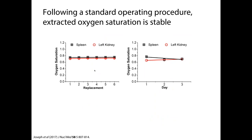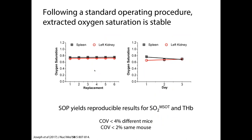Given the fluctuations we saw — oxygen saturation showing a relatively minor trend and total hemoglobin a bit larger — we developed a standard operating procedure which allowed us to extract measurements that were stable. What I show here are measurements for repeated measures over six different repeats for oxygen saturation, and over several days for the same metric. When you analyze these metrics over a larger cohort of between seven and ten mice, you get a really fantastic coefficient of variation: less than four percent for different mice, and less than two percent for the same mouse. When you relate this to precision reported for other modalities — for example, MRI is only reported to be in the range of 10 to 15 percent, and with PET this can go as high as 20 percent — these numbers gave us great confidence that we could use this technique reliably for longitudinal studies.